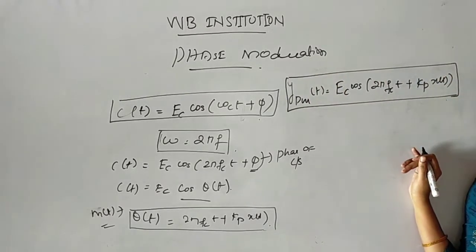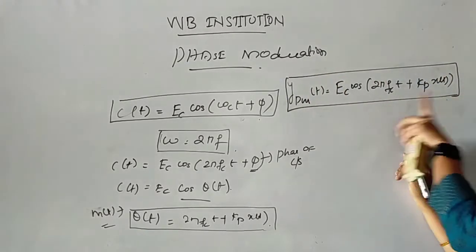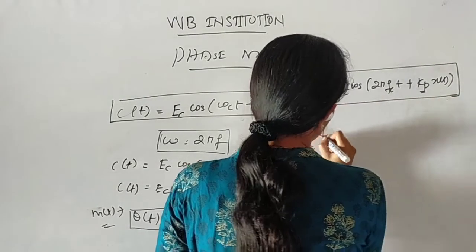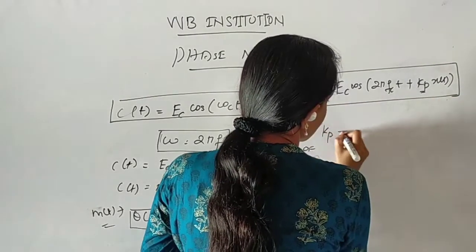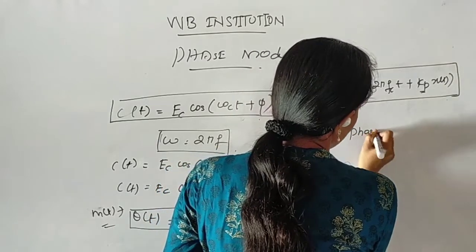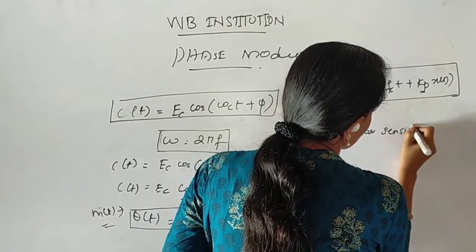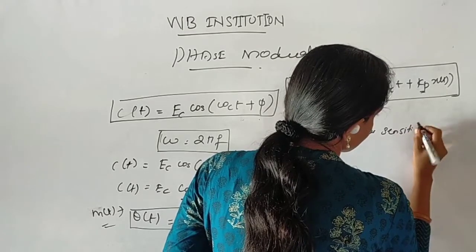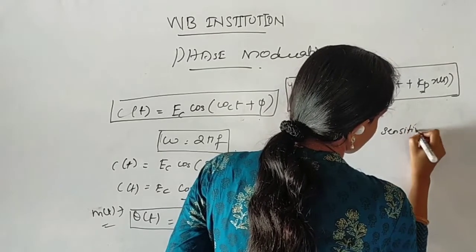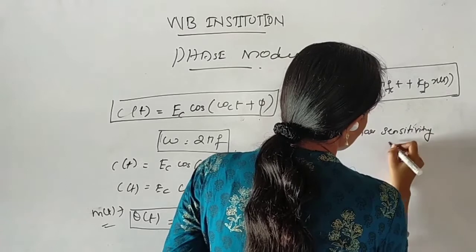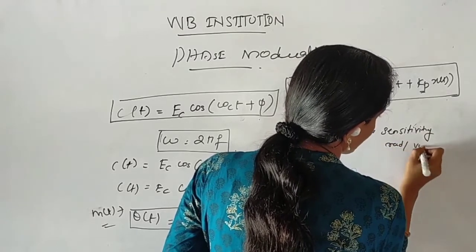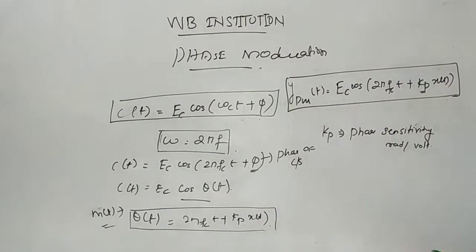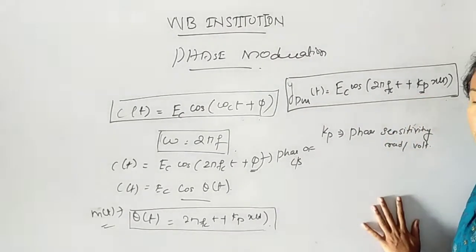Note this important equation. kp stands for phase sensitivity. The unit of phase sensitivity is radians per volt (rad/V).